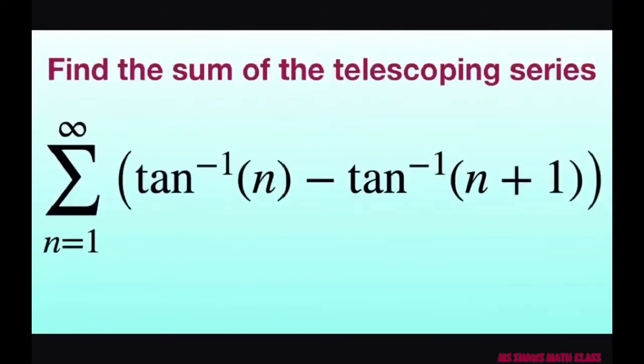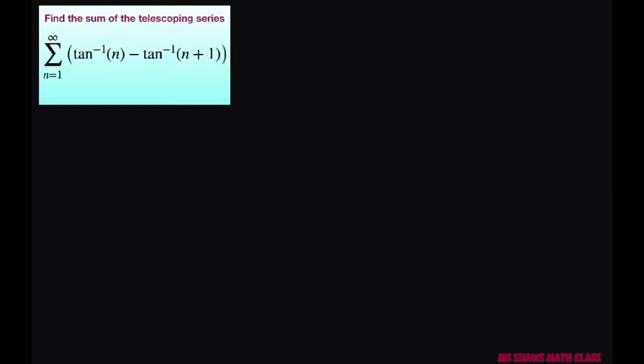Hey everyone! We're going to find the sum of the telescoping series. We have inverse tan of n minus inverse tan of n plus 1. Basically what we're going to do is take some partial sums. So we're going to do our first partial sum.